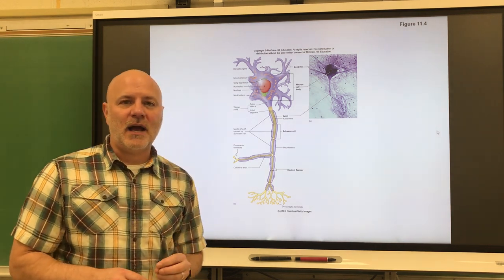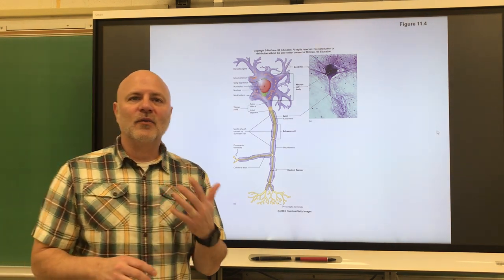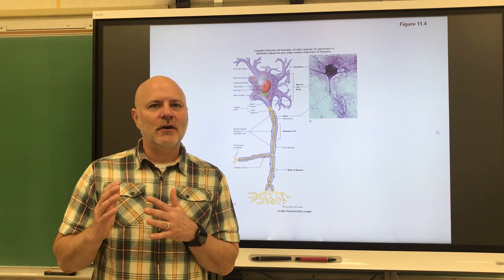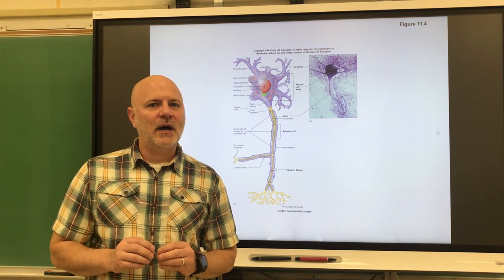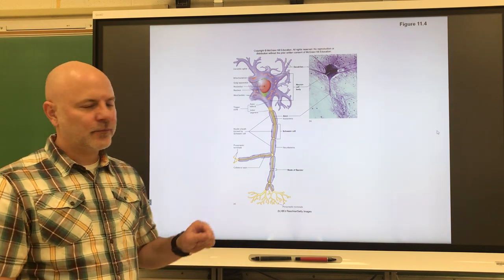Neurons have a very high metabolic rate, and the reason for that is that a nerve impulse is very costly. We'll get to why that is in a little bit.